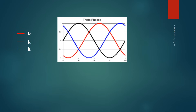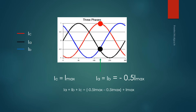For example, at the instance corresponding to 240 degrees, Ic equals maximum, while Ib and Ia each equal minus 0.5 Imax. So the sum of the return currents equals zero. This is true for every instance. We can therefore remove the neutral conductor without affecting the voltage or current in the circuit, reducing conductors from six to three — a 50% saving in conductor cost.